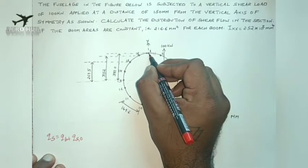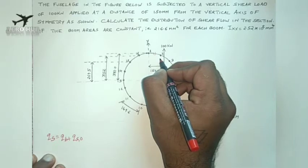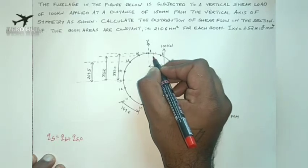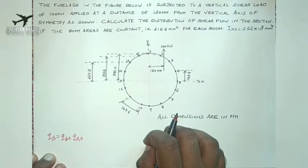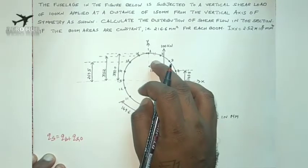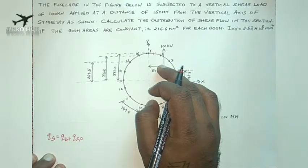When between two booms, the shear flow distribution will always be constant. When you have a boom area, the shear flow distribution between the boom areas will be constant. And when you cross one boom, there will be a certain amount of change in the shear flow.